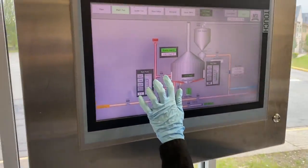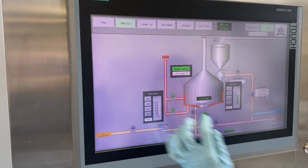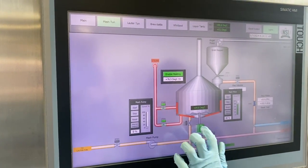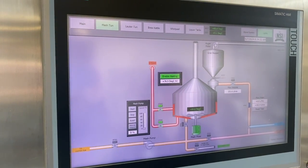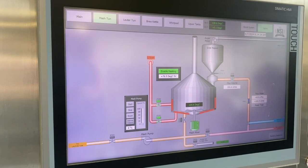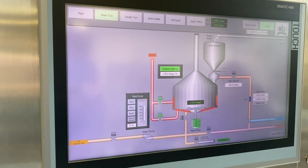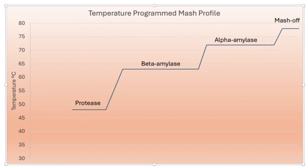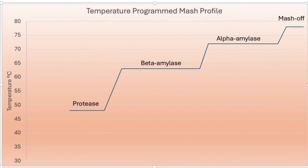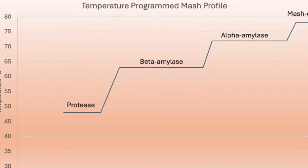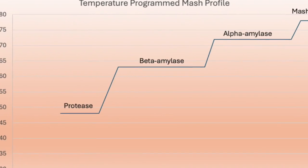As soon as the mash is hydrated, the enzymes will start to break down starches into sugars and hydrolyze proteins. By controlling the temperature and time during mashing, the brewers will, among other things, also control the color and the flavor of the final product.